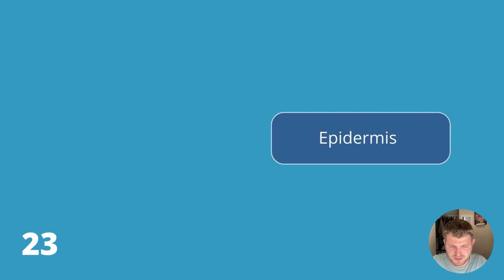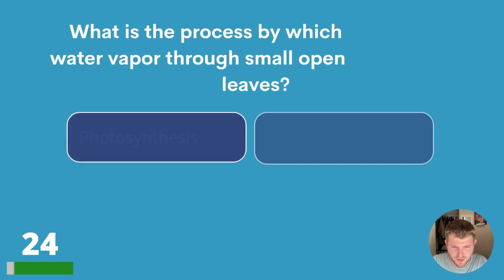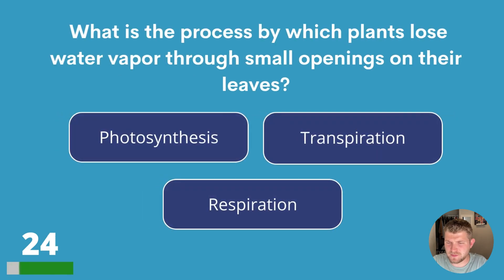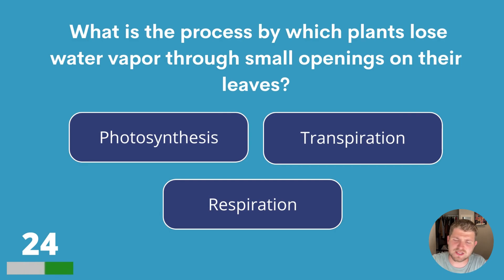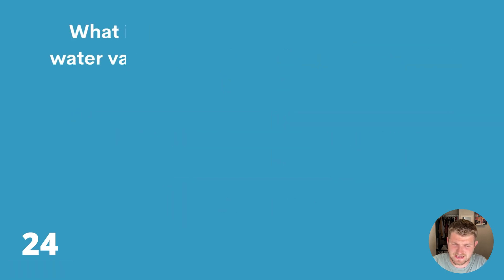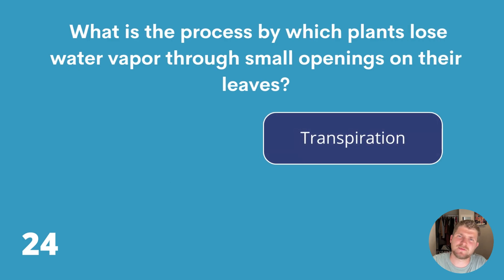Question twenty-four. What is the process by which plants lose water vapour through small openings on their leaves? Photosynthesis, transpiration or respiration? The answer is transpiration.